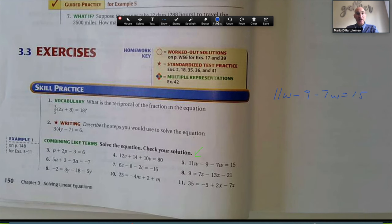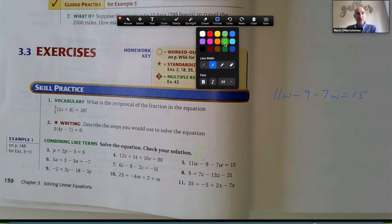And again, they could go ahead and maybe pick a different color, and they could annotate right on here and say, okay, the first step is I want to solve by combining like terms. So 11w minus 7w, okay, that's going to be 4w, and they can work the problem through together with you.